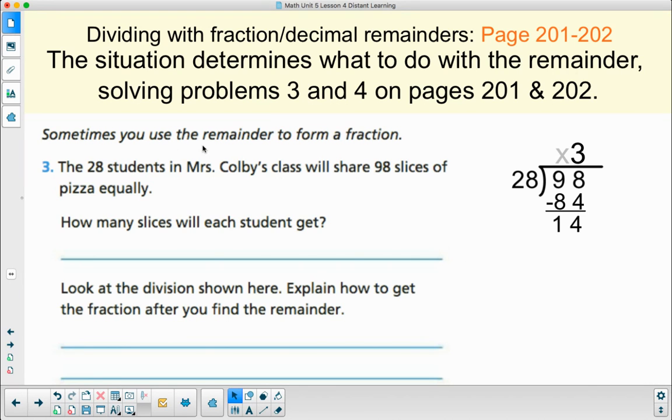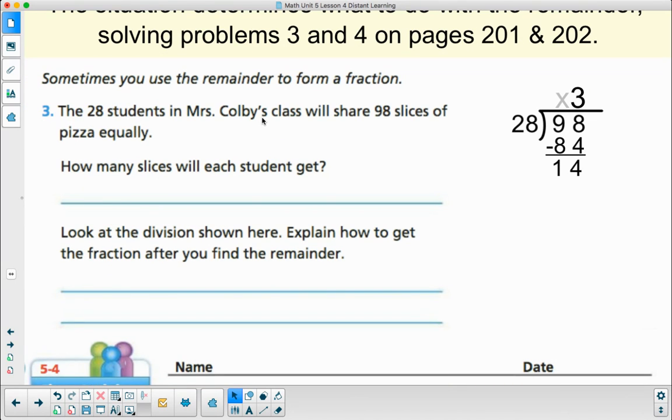Let's go back to number 3. Sometimes you use a remainder to form a fraction. Ms. Colby's class has 28 students and they're going to share 98 slices of pizza equally. We have 98 slices of pizza divided amongst 28 students equally. They're each going to get 3 slices. 3 slices for 28 people would be 84 slices. There would be 14 slices left. As I look at this division, I know that I can cut these pieces in half, can't I? And they could each get a half a slice.